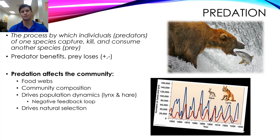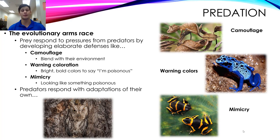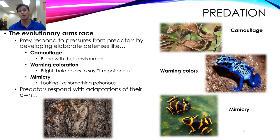Predation also drives natural selection — there's an evolutionary arms race. Prey respond to predation pressures by developing very elaborate defenses, such as camouflage, seen with the tree-leaf gecko that looks just like a dead leaf. They can also develop warning coloration and become poisonous — like the poison dart frog in the Amazon rainforest, which has become poisonous to eat and developed warning coloration to warn predators away, deterring them from eating it.